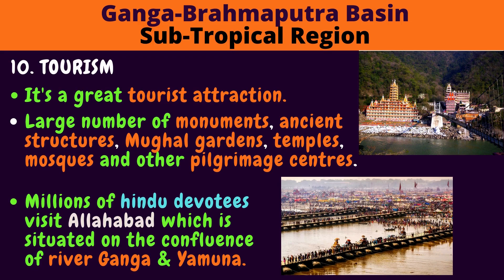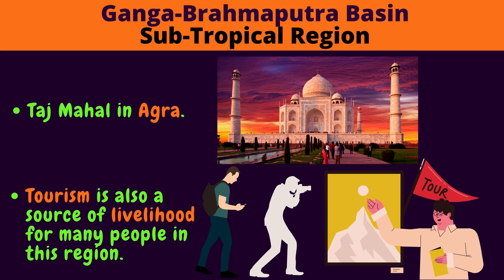The Ganga Brahmaputra Basin, the subtropical region, is a great tourist attraction. Large numbers of monuments, ancient structures, Mughal gardens, temples, mosques and pilgrimage centers are found here. Millions of Hindu devotees visit Allahabad, which is situated at the confluence of rivers Ganga and Yamuna. Look at the beautiful picture of the Taj Mahal in Agra — it's also found in this region. Tourism is also a source of livelihood for many people here.